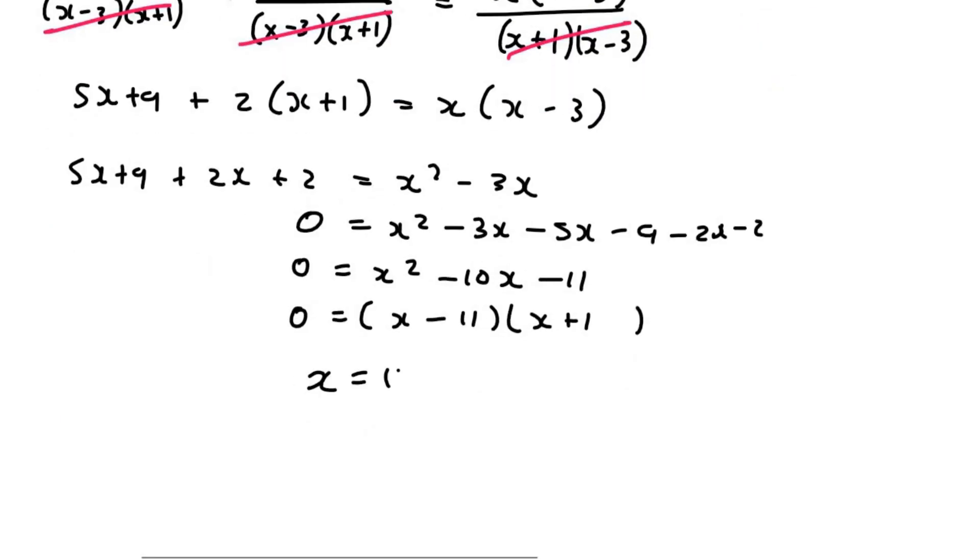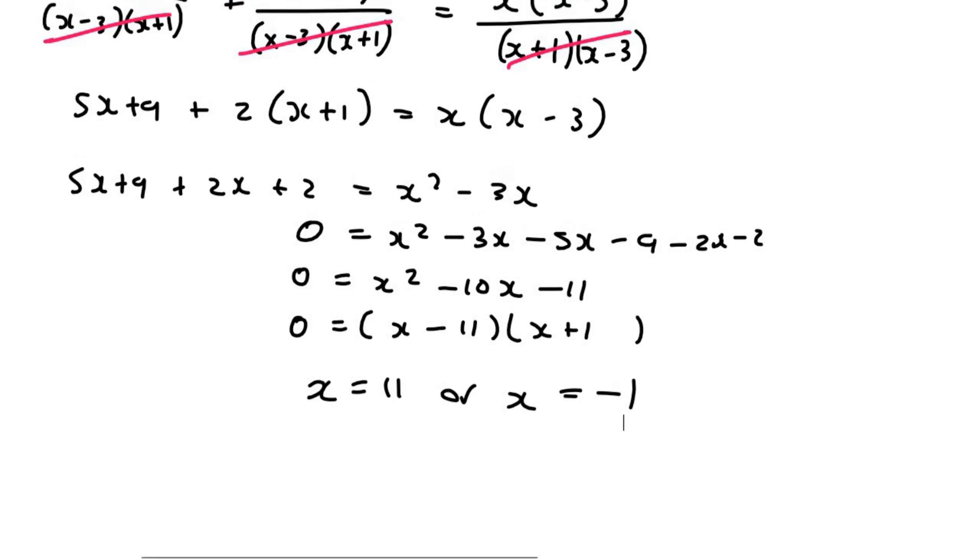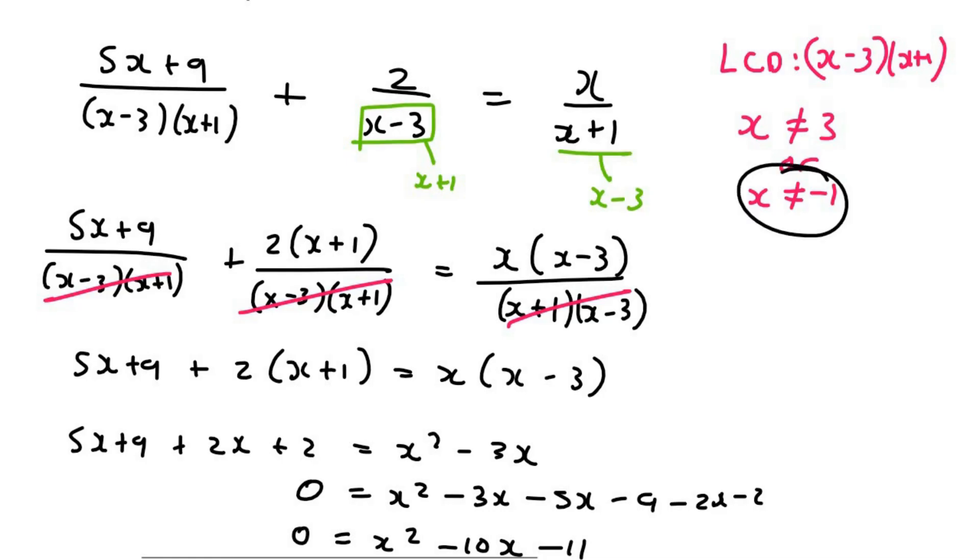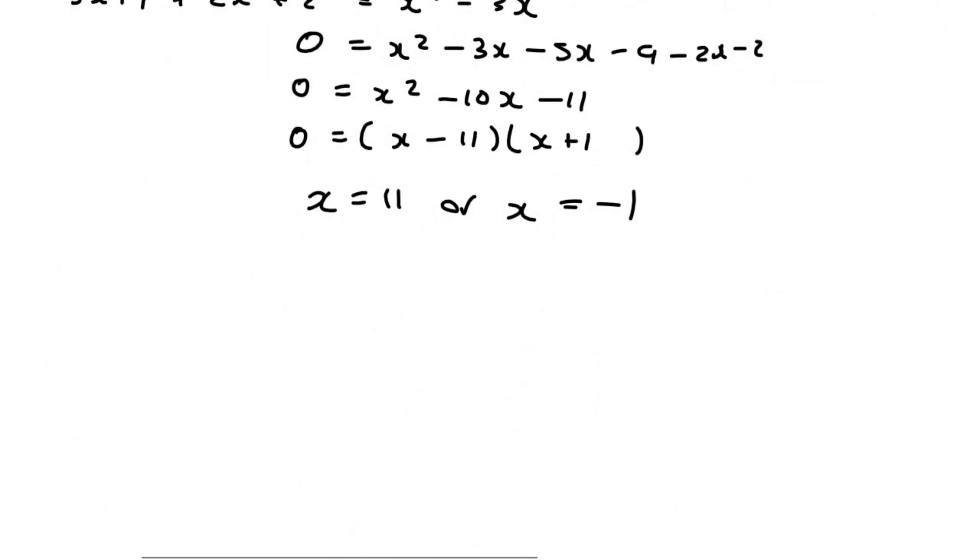x is going to equal to 11 or x is going to be equal to minus 1. But now, if we go to our restrictions, x was not allowed to equal to negative 1. And so, for that one, we'll say Na. So, therefore, x can only equal to 11.